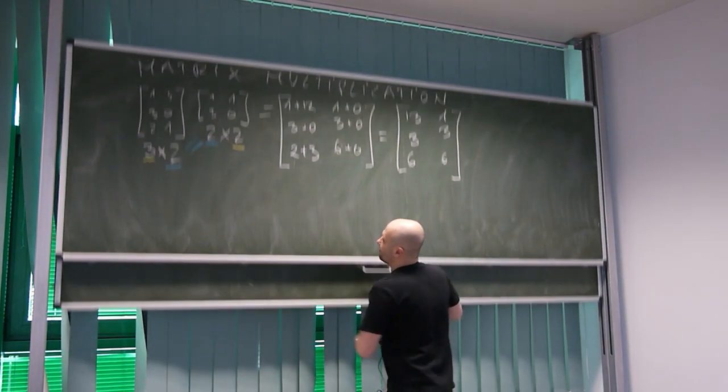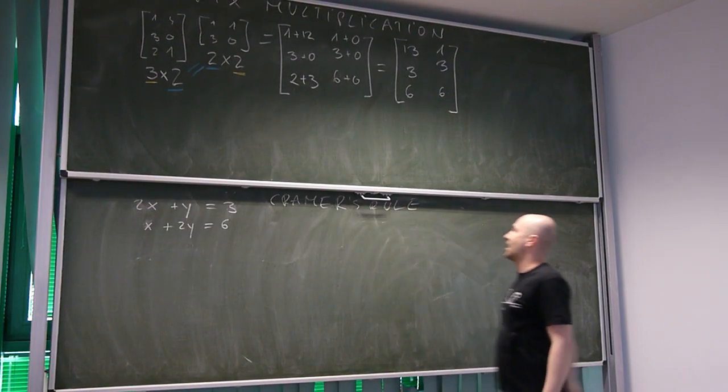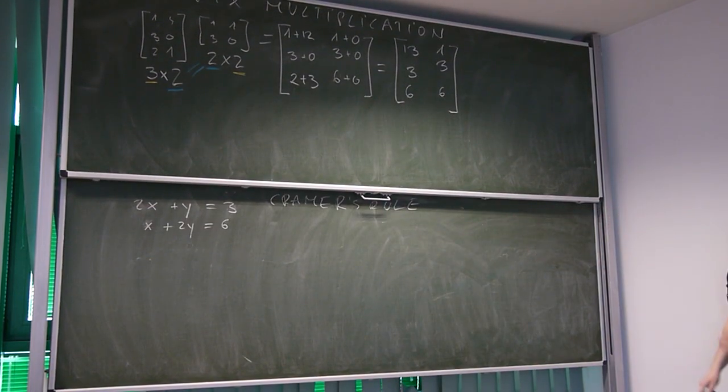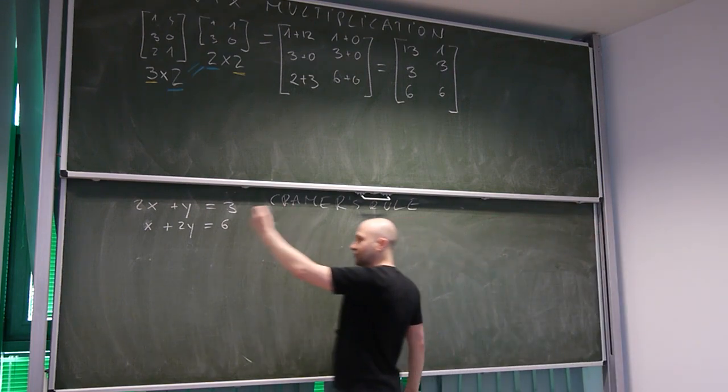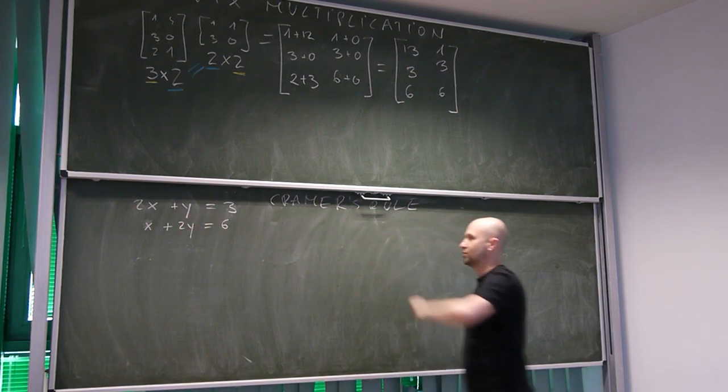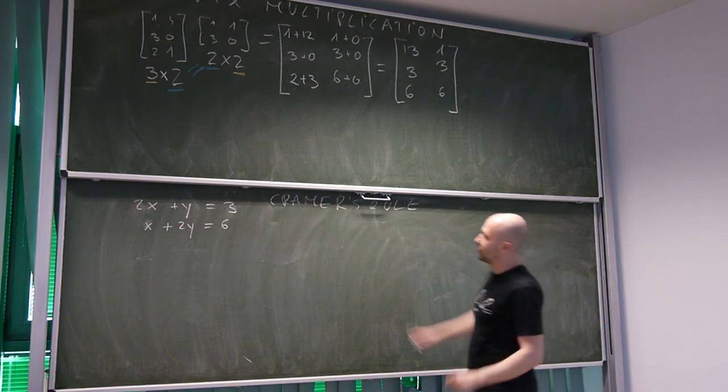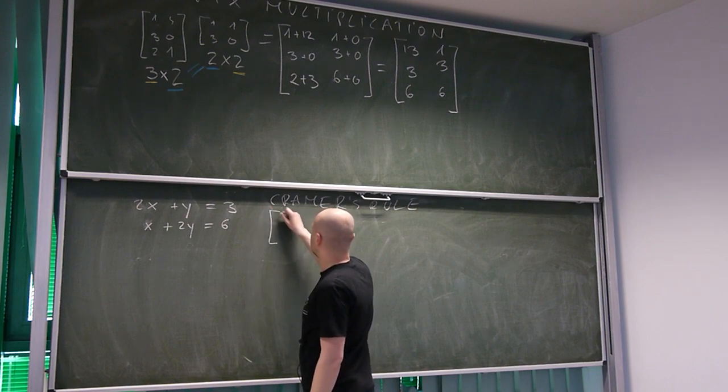The second thing I wanted to review with you is Cramer's rule. Here we have a system of two simultaneous equations with two unknowns. First thing we do, we put it into matrix notation.